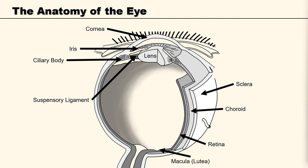The macula is an oval-shaped pigmented area in the centre of the retina, responsible for central high-resolution colour vision that is possible in good light. It is this kind of vision that is impaired if the macula is damaged. At the very centre of the macula is a fovea, or impression. The optic disc or optic nerve head is the point of exit for the ganglion cells leaving the eye. Because there are no rods or cones overlying the optic disc, it corresponds to a small blind spot in each eye.